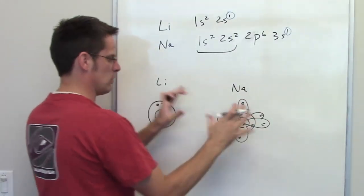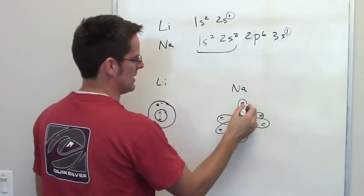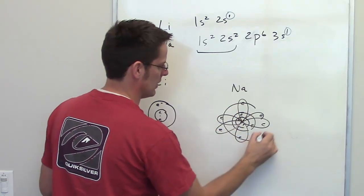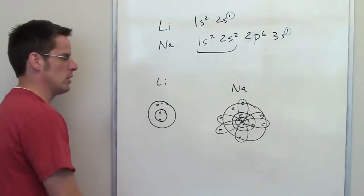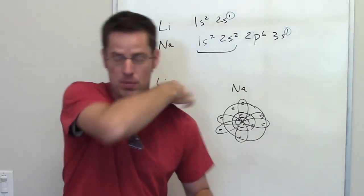And then outside that, with all of this nested within it, is a 3s orbital. And the 3s orbital is even larger, and it has a single electron in it. Okay, that's a lot more explanation than you probably want or need. Here's the point.